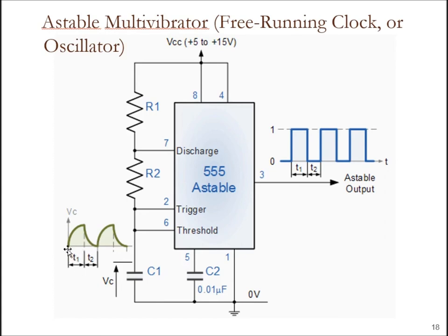Here's how we get into different duty cycles. T1 is the amount of time it takes to charge the capacitor up to two-thirds of VCC. T2 is the amount of time it takes to discharge it down to one-third of VCC. If I put a large resistor here, it's going to take longer to charge up. If I put a small resistor here, it's going to discharge quicker.